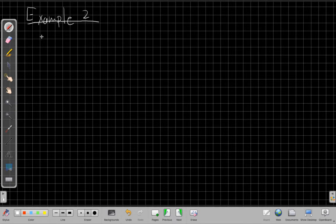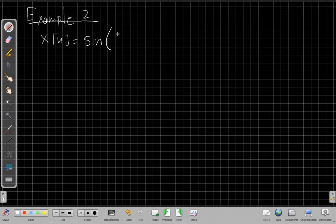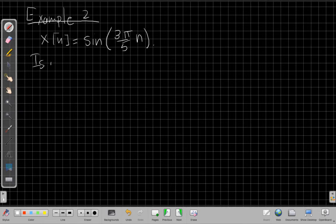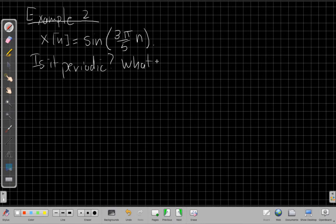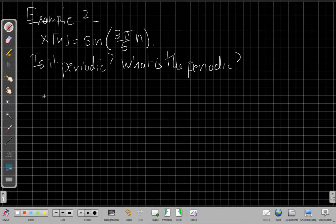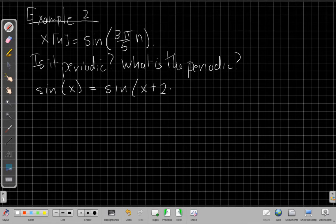Example 2: So imagine for this case our signal X[n] is equal to the sine of 3π/5 n. And so the question we're trying to answer is: is it periodic, and what is the period? So sine has that same property we mentioned with cosine a minute ago. For any value of x, integer or not, sine of x is equal to sine of x plus any shift of 2π M as long as this M is an integer.